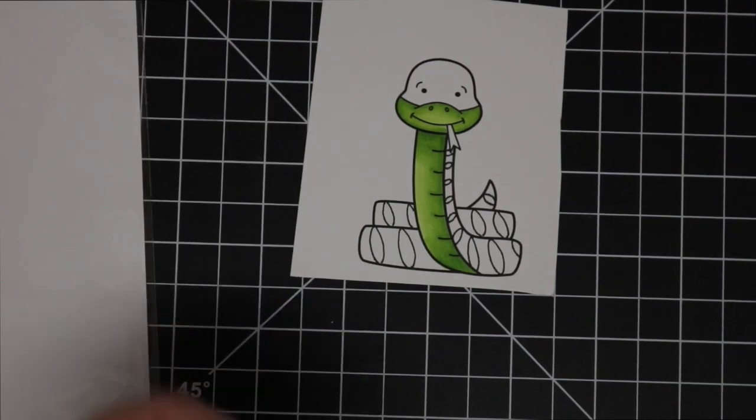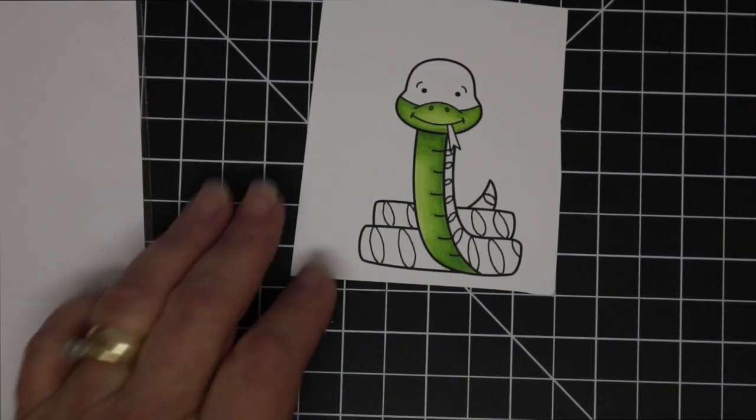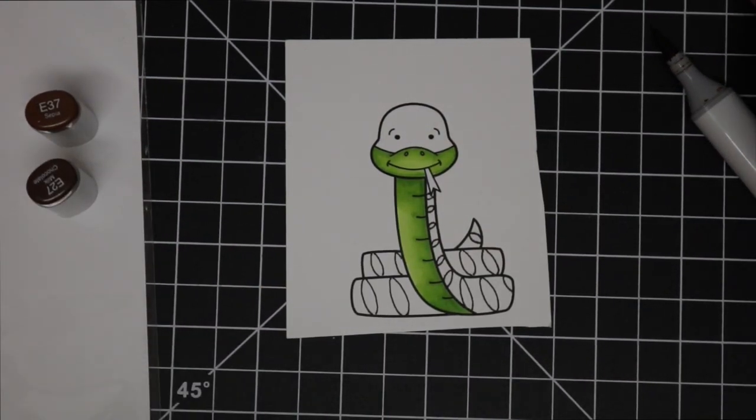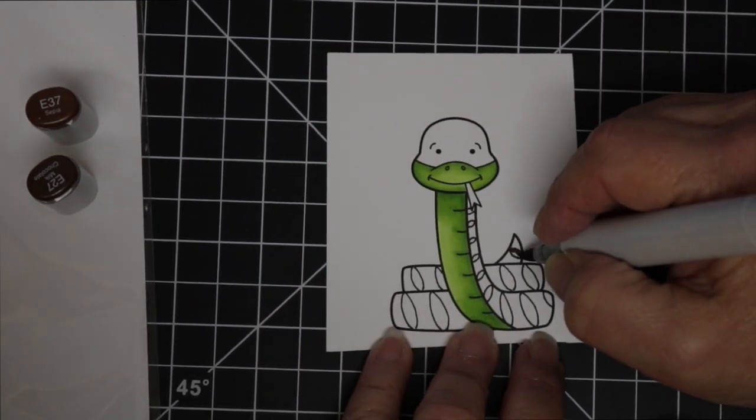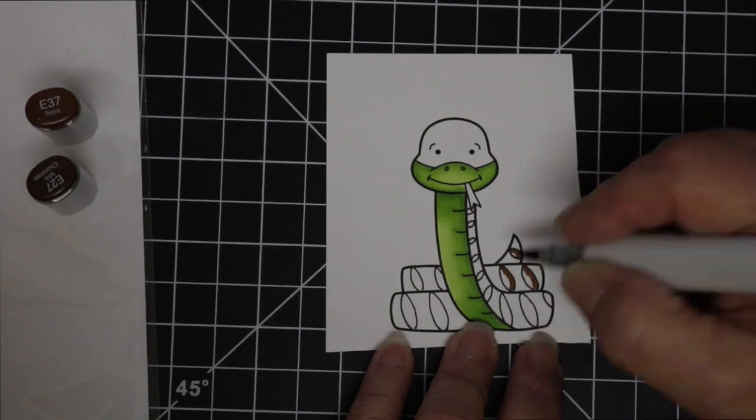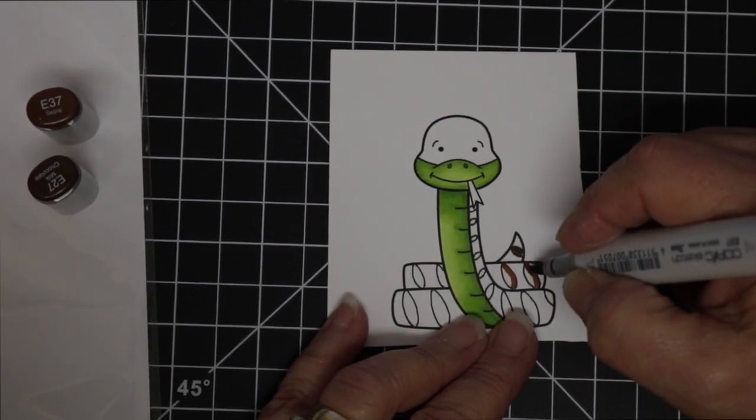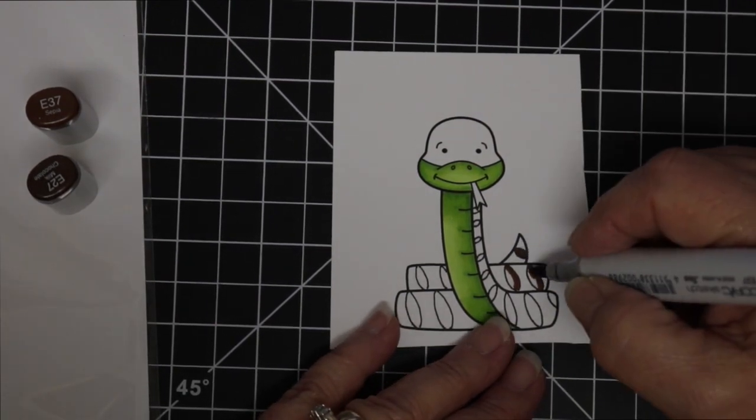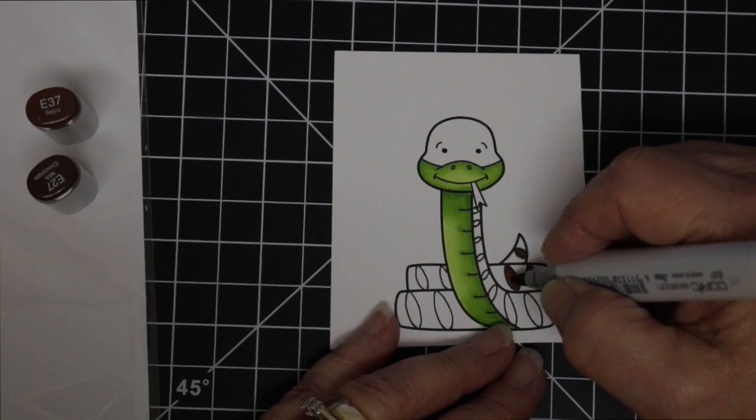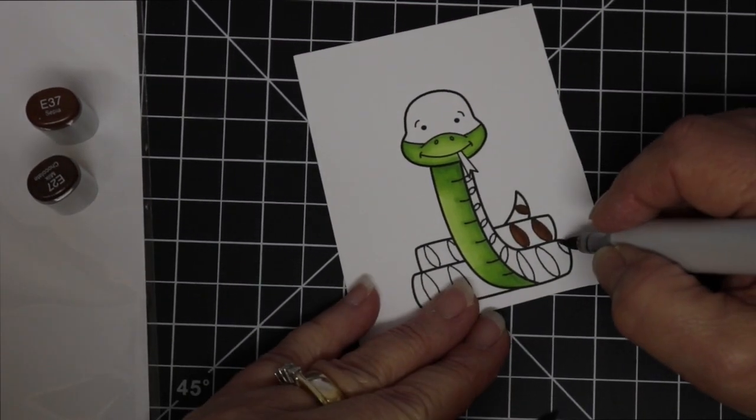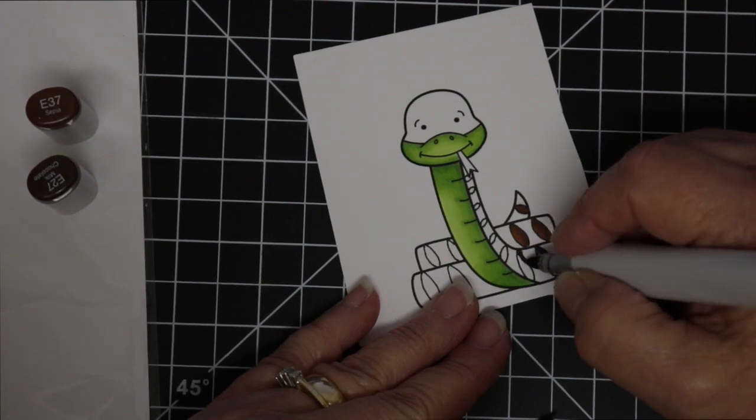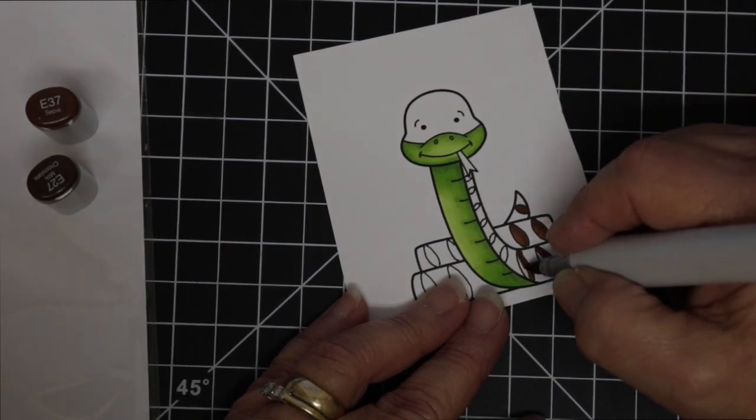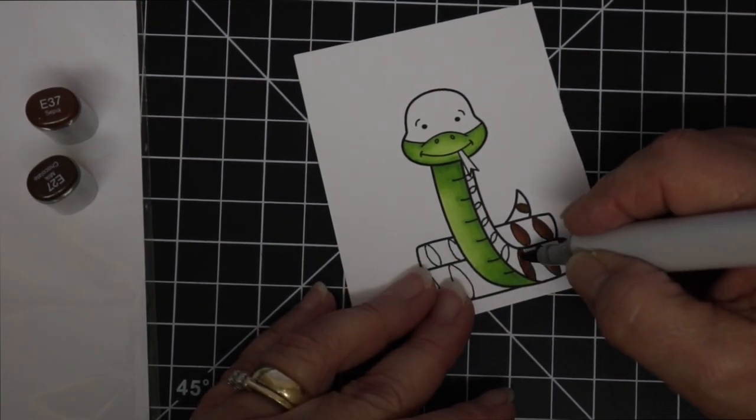I chose some pretty dark browns for the markings on the snakeskin. The E37 and then the E27. E27 is the darker marker and I just chose two colors for this because these areas are pretty small and I was able to get the look that I wanted with the two colors. So just laying down my E27 and coming back over it with the E37 and I will be doing this on all of the spots.